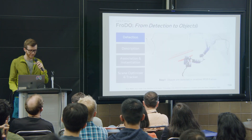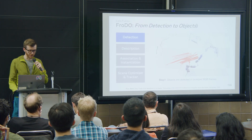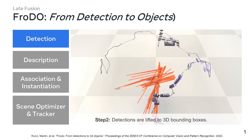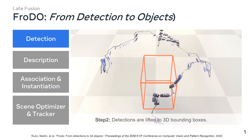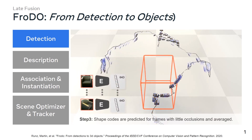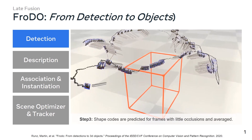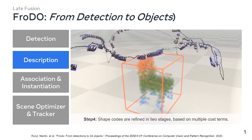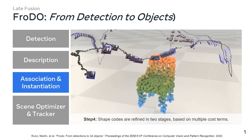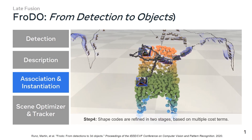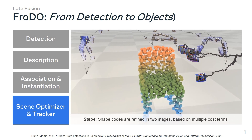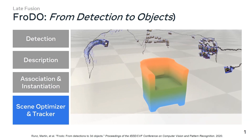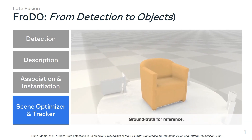I will first talk about the late fusion route. We started this research a while ago, so you're not going to see any ARIA data here. In this project Frodo, we first detect objects in 2D, describe them using codes for each object detection, associate them and produce a 3D bounding box, and then initialize a 3D reconstruction that we can then optimize and return a dense object at the end.